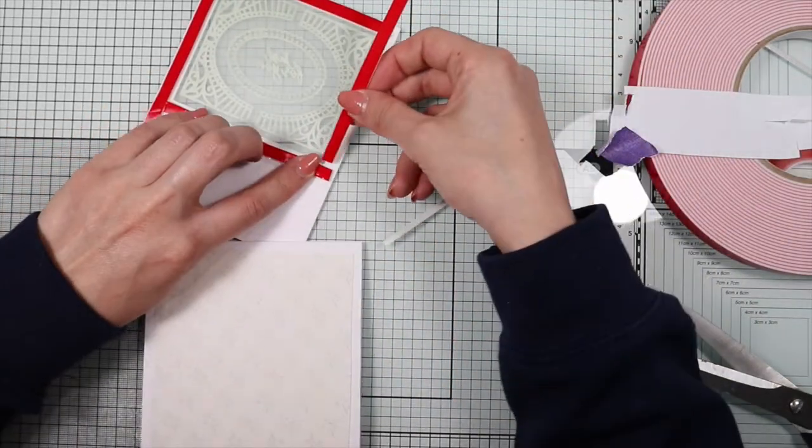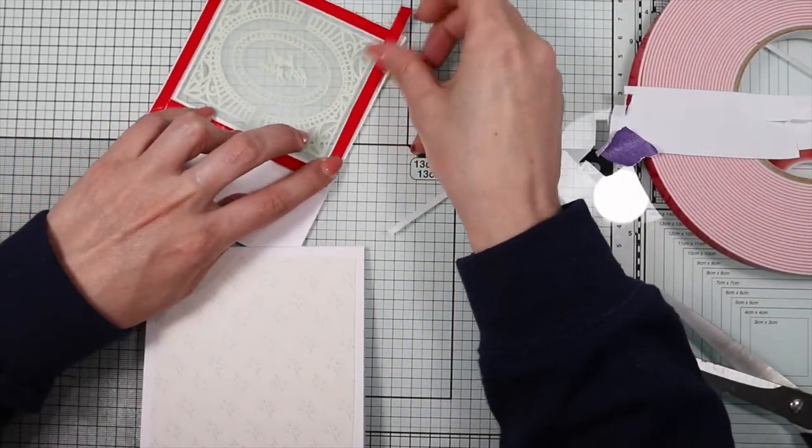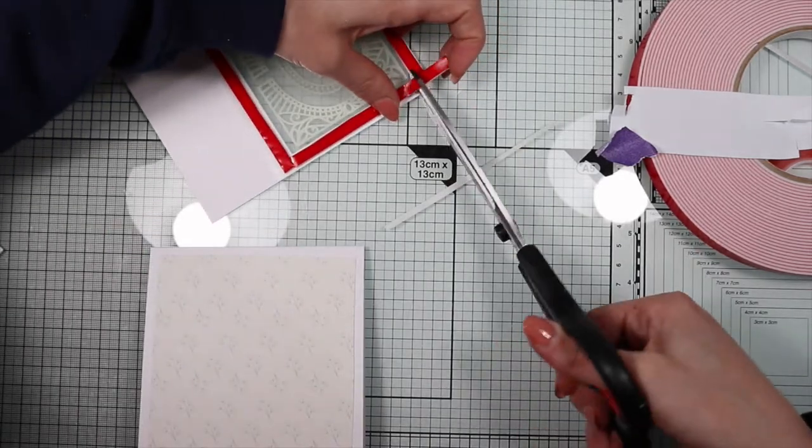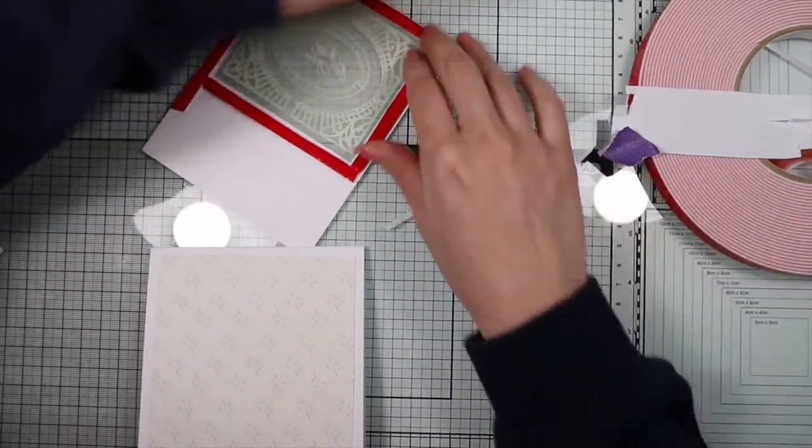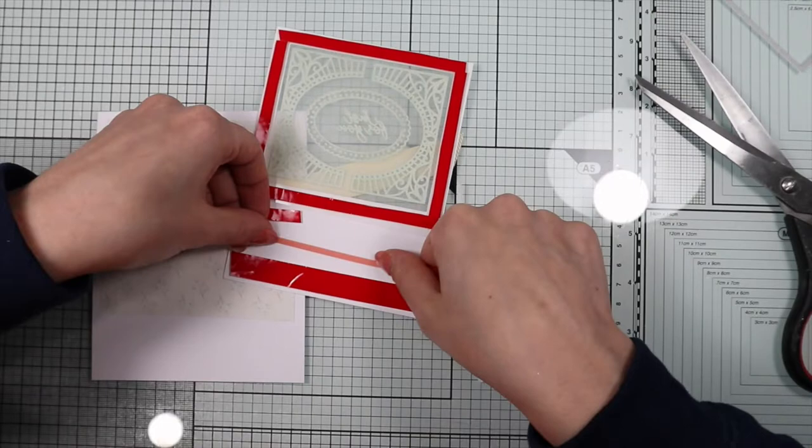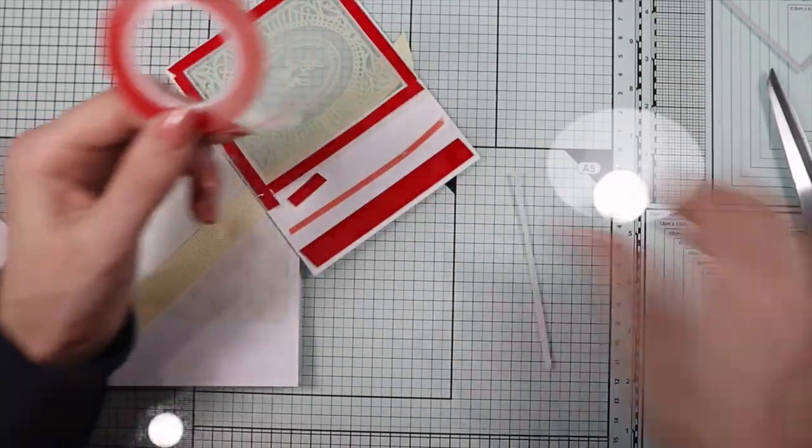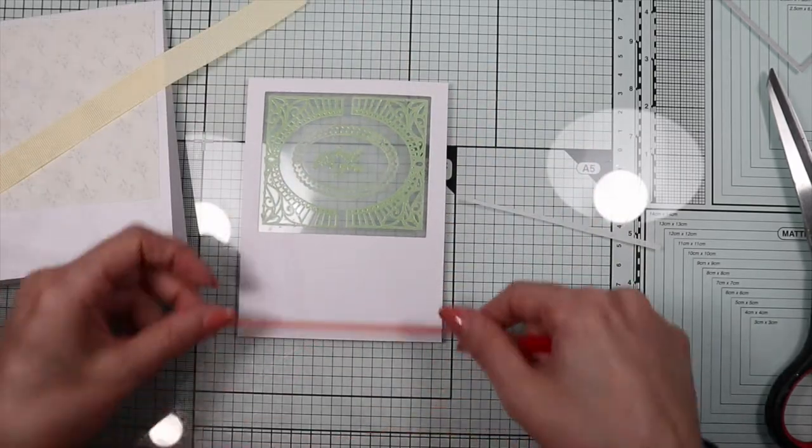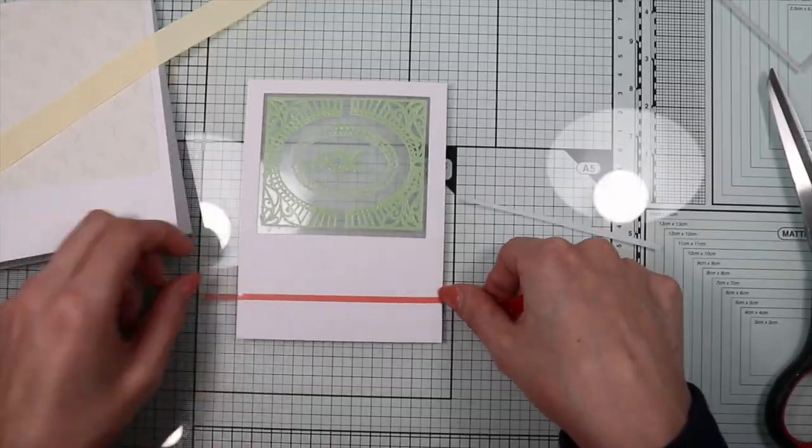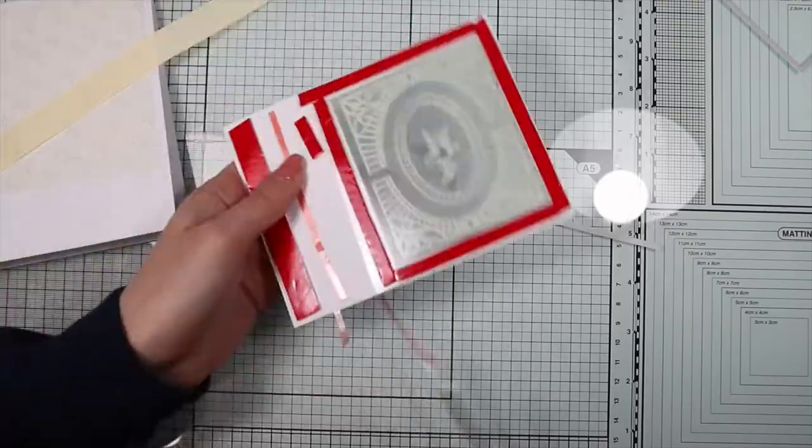I make sure that the area where I'm going to put the shaker element is well closed. Before assembling everything I'm going to decorate the card with the cream and green ribbon that we find inside the kit.